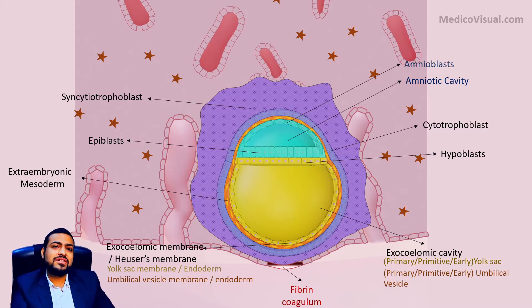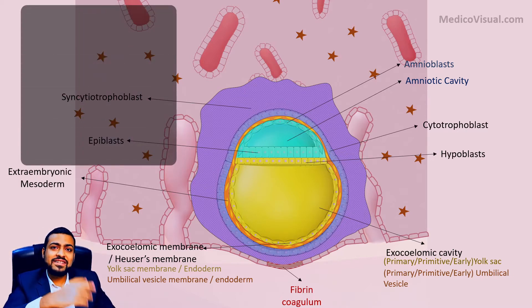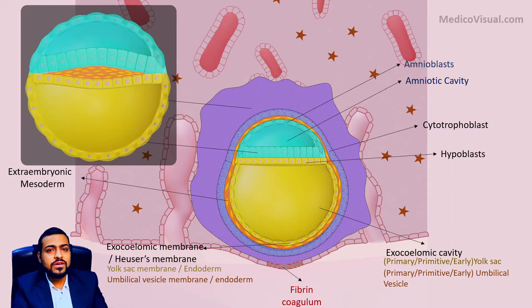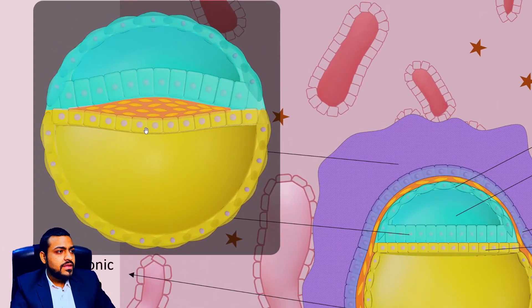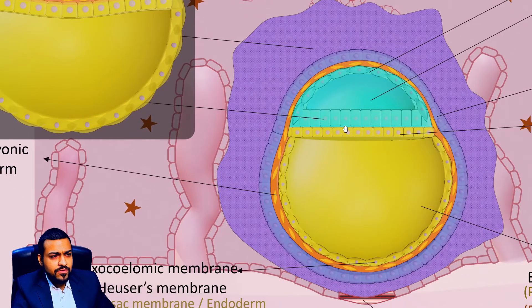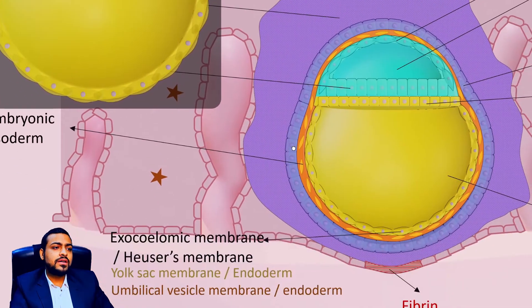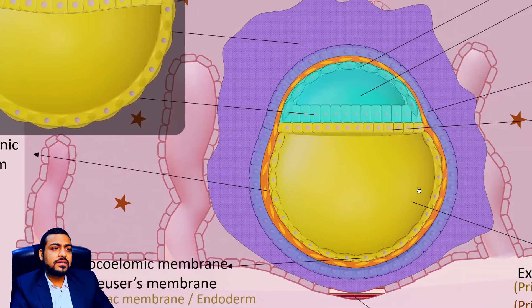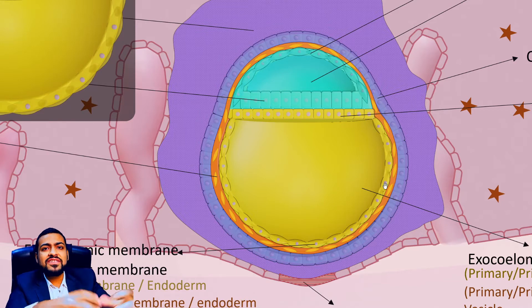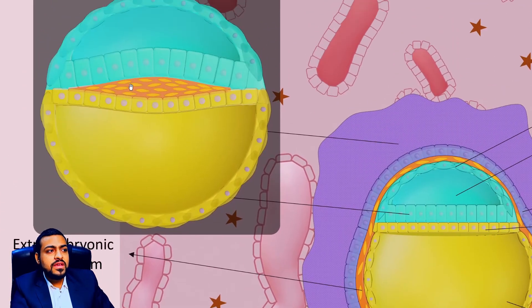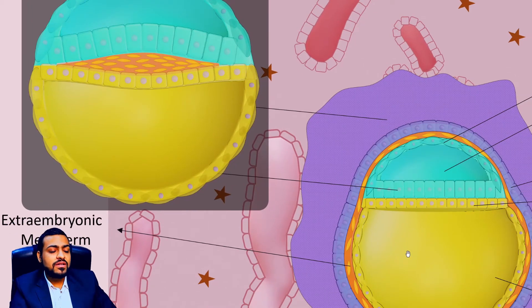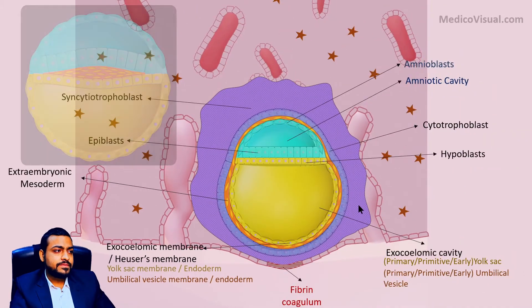The complete name of this mesoderm is extra embryonic mesoderm. There is also an intra embryonic mesoderm, but that will form during the third week of development. To differentiate this mesoderm from intra embryonic mesoderm, we call it extra embryonic mesoderm — because it is outside the embryo proper. Intra embryonic mesoderm will be inside the embryo proper.